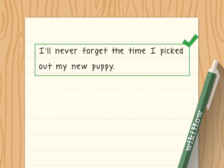Create an engaging topic sentence. Draw the reader into your narrative paragraph by creating excitement or suspense with your opening sentence. This sentence should introduce the purpose of the paragraph, the story, and make the reader want to read further. A good first-person topic sentence might be: 'I'll never forget the time I picked out my new puppy.' If you were using third-person, the same topic sentence would be written: 'He would never forget the time he picked out his new puppy.'